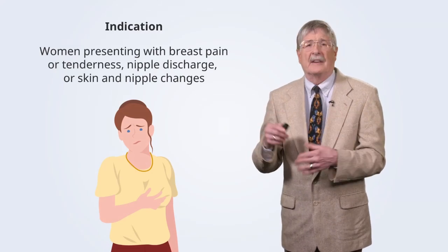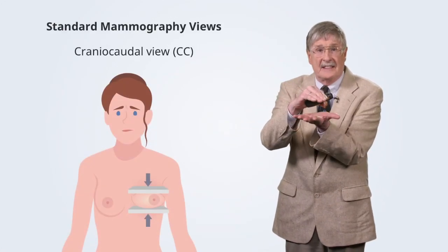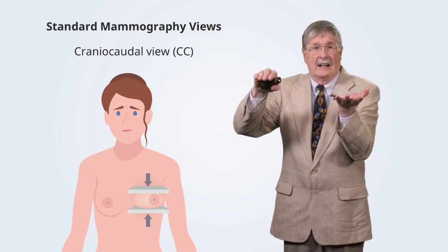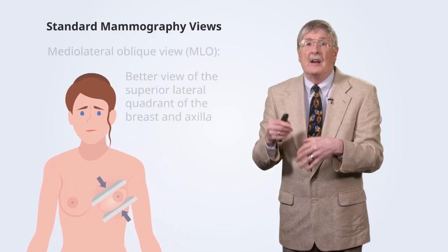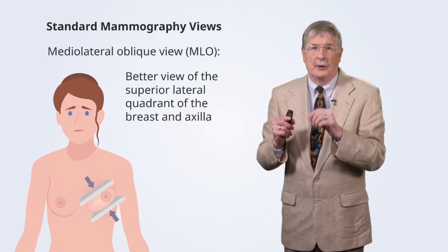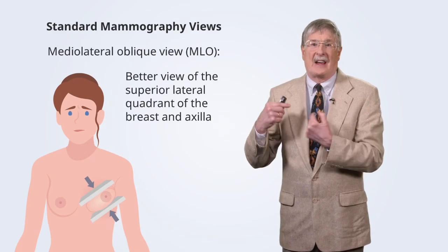There are standard views. The typical procedure includes the cranial-caudal view, with the breast compressed between plates to distribute the tissue as much as possible for good radiation penetration. The medial lateral oblique view, or MLO view, is better for the superior lateral quadrant — the upper outer quadrant of the breast — which is actually where the majority of breast cancers occur and where most breast tissue is, as the breast extends up into the axilla.